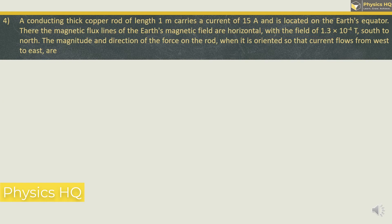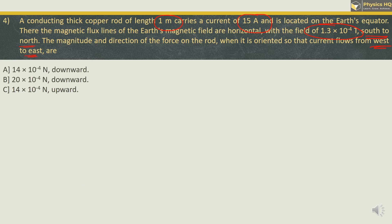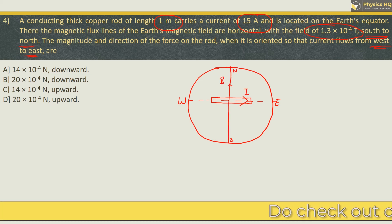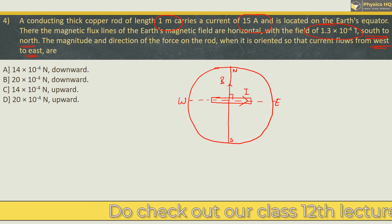A conducting thick copper rod of 1 meter carries a current of 15 Ampere and is located on the Earth's equator. The Earth's magnetic flux lines are horizontal with field 1.3 x 10⁻⁴ tesla, directed south to north. The current flows from west to east. The magnetic field goes from south to north, so the angle between the current direction and the magnetic field direction is 90 degrees.